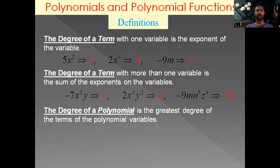The degree of a polynomial is the greatest degree among all its terms. Consider 2x cube minus 3x plus 7. The degrees of the terms are 3, 1, and 0 respectively — 7 is a constant with degree 0. The highest degree is 3, therefore the degree of this polynomial is 3.